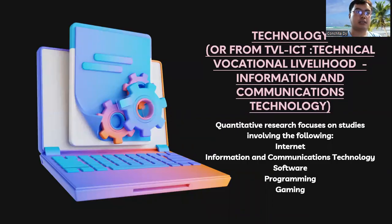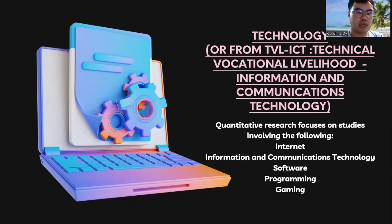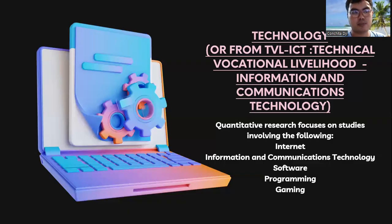In Technology, also known as ICT — Information and Communications Technology — quantitative research focuses on the following areas: internet connection studies, gadgets usage, social media, and telephones — anything related to hardware. For software, we can focus on topics like Microsoft Word, Microsoft Excel, Skype, games like Mobile Legends, which falls under gaming. In programming, we can focus on topics involving JavaScript.